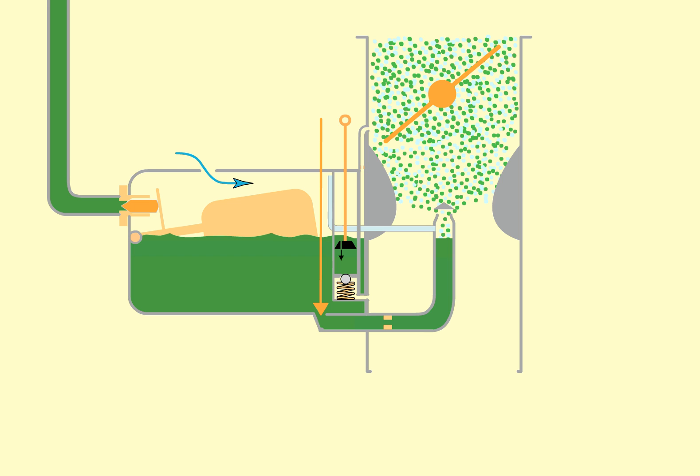However, if the throttle is opened rapidly, the droplets of fuel being heavier don't accelerate as fast, which leaves a lean mixture until the fuel catches up. So the fuel within the accelerator pump pushes the poppet valve off its seat and adds fuel into the airstream.